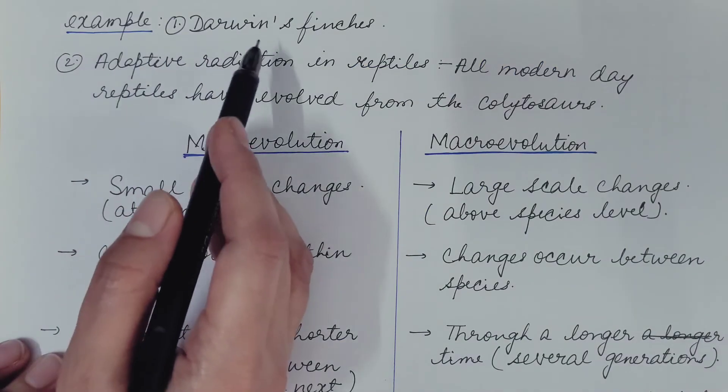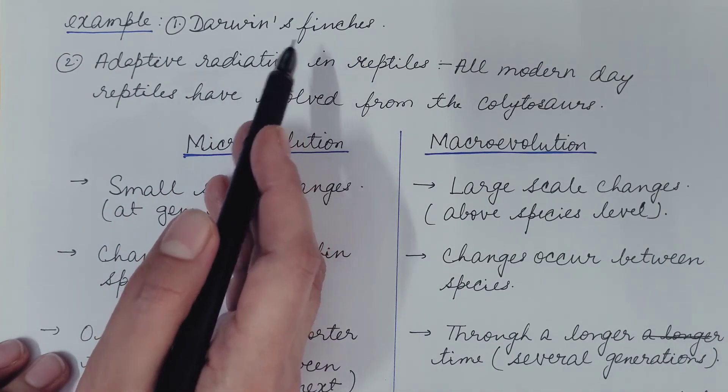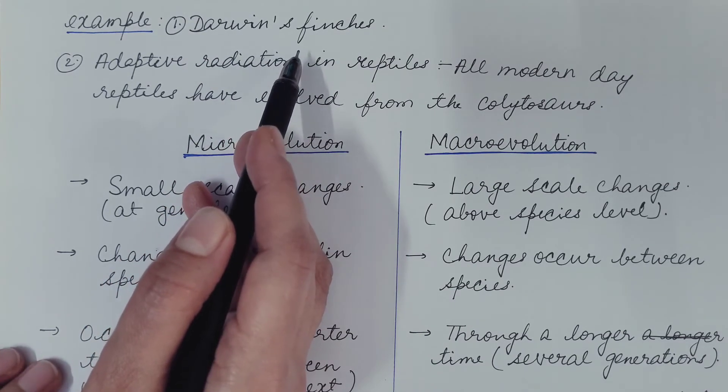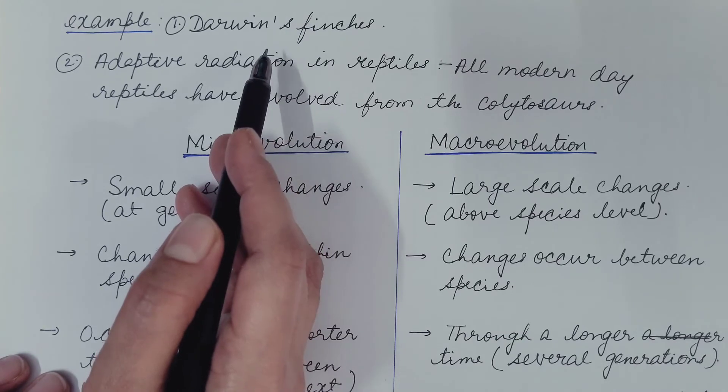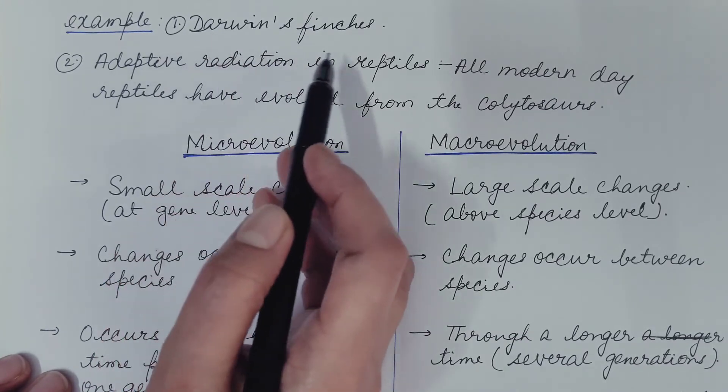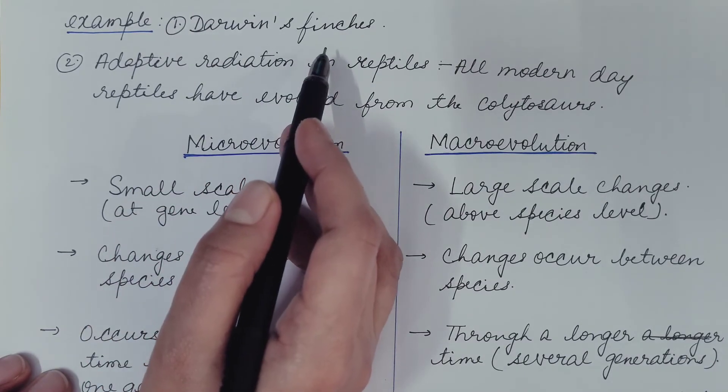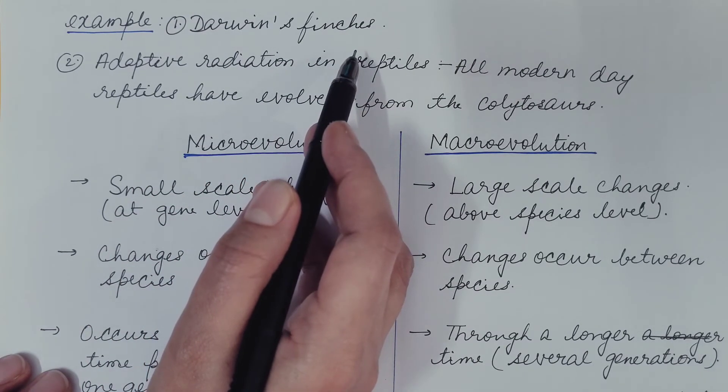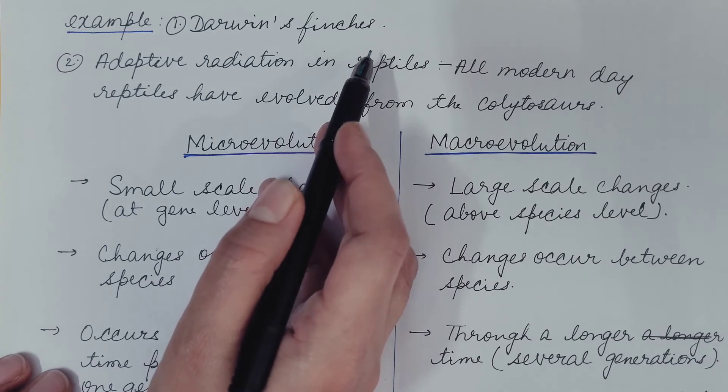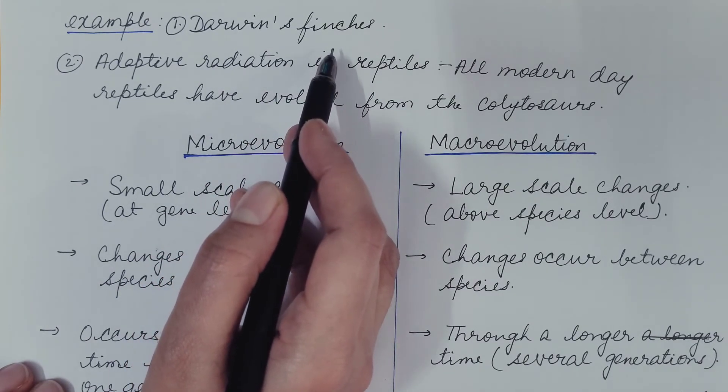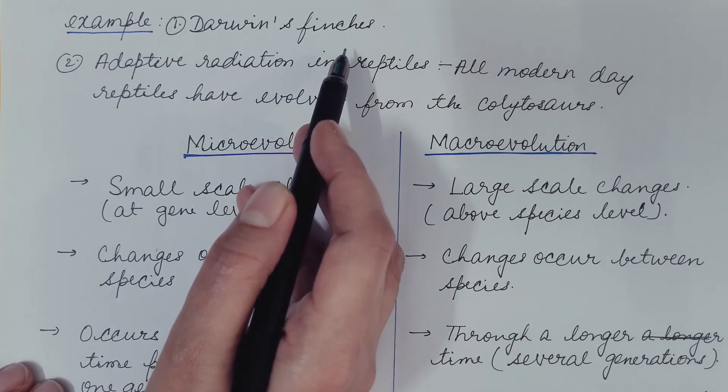Example, Darwin's finches. We have already discussed it in detail. You can refer my video. The link is given in the description box. Earlier, there was only one species of finches in the mainland. And when they migrated to different islands in the Galapagos Islands, then one ancestral species split into 13 different species.